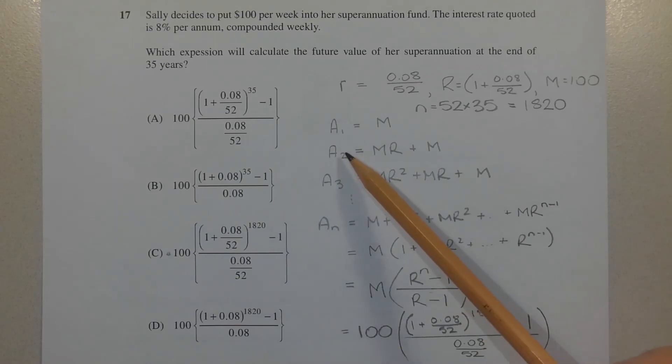A2, the value at the end of the second week, is found by increasing A1 by 0.08 over 52 by multiplying M by capital R. Then Sally deposits another M dollars at the end of the second week. So the value after week 2 is MR plus M.